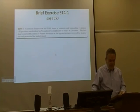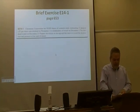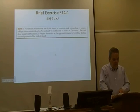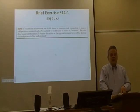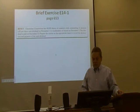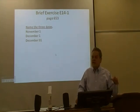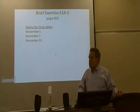Brief Exercise 14.1 says: our corporation has 80,000 shares of common stock outstanding. It declares a dollar per share cash dividend on November 1st, to stockholders of record December 1st; the dividend is paid December 31st. Prepare the entries on the appropriate dates to record the declaration and payment of the cash dividend. Before we do those entries, let's name the three dates — there were three dates described, and they have names of significance.